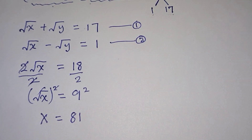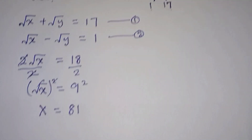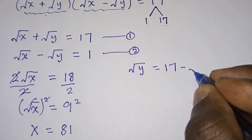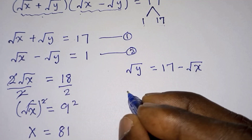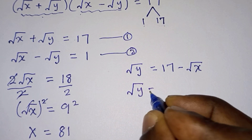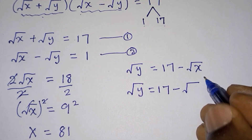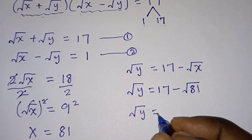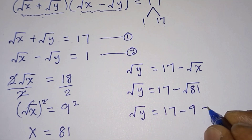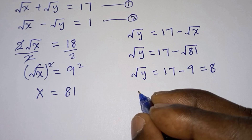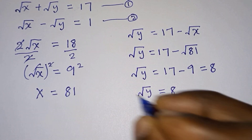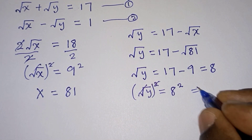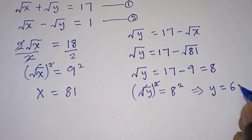Now that we know x, we can find y. From equation one, square root of y equals 17 minus square root of x. Since square root of x is 9, we have square root of y equals 17 minus 9, which is 8. So square root of y equals 8. Raising both sides to the second power gives y equals 8 squared, which is 64.